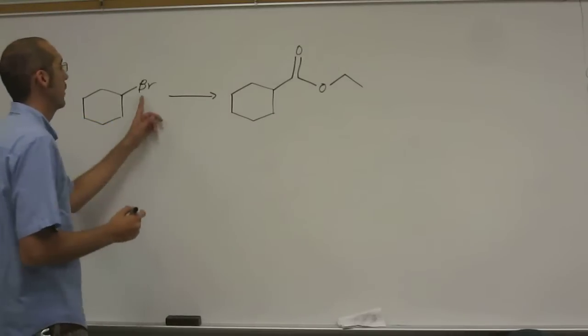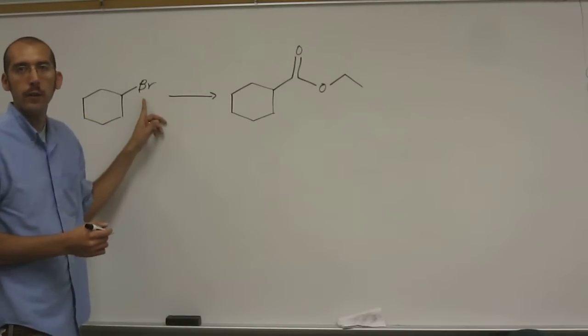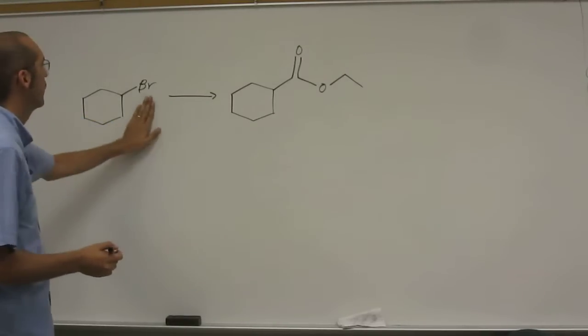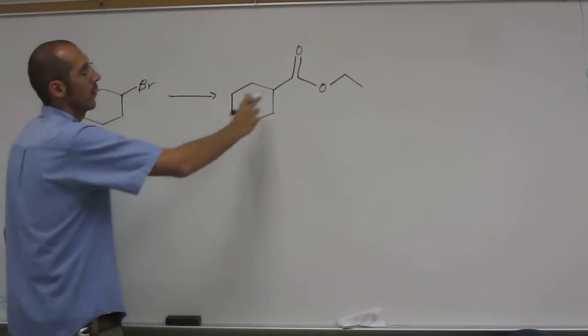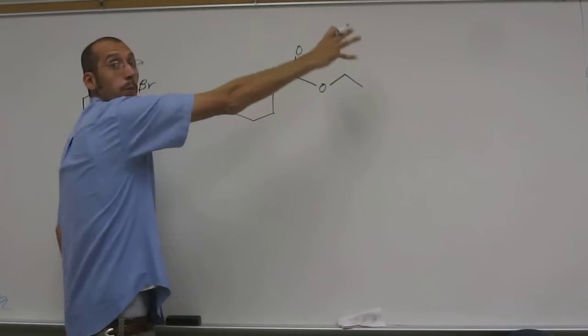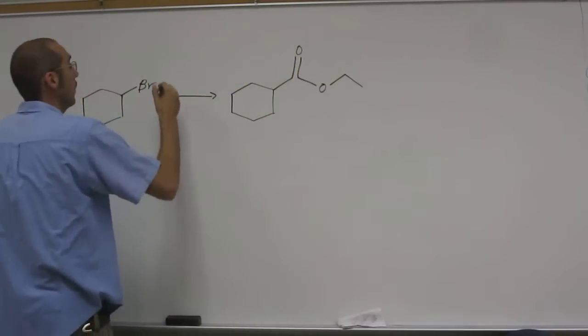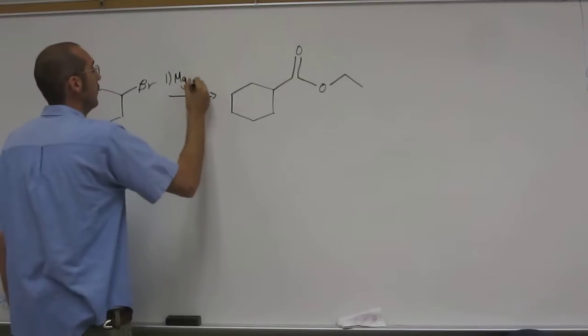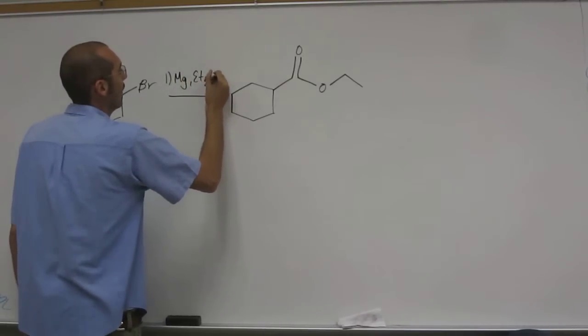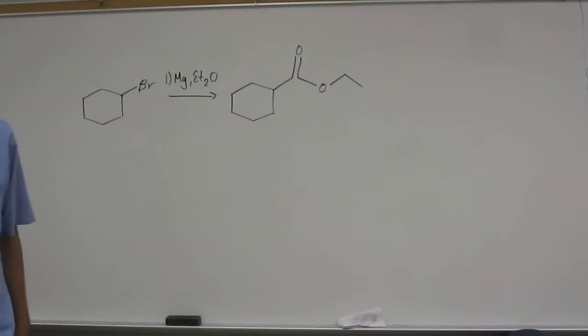the first step, of course, is going to be making the Grignard reagent. Because you've got to make this thing into something that will be a good nucleophile to create this rest of it. So in order to do that, Grignard reagent, is you just add some magnesium metal and ethanol, the solvent. You don't necessarily even have to put ethanol in there.